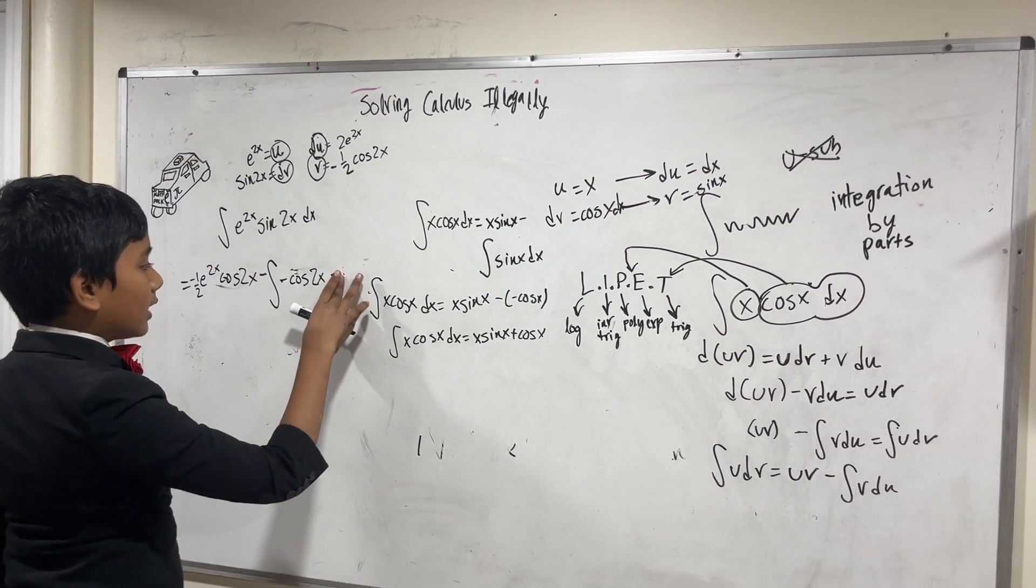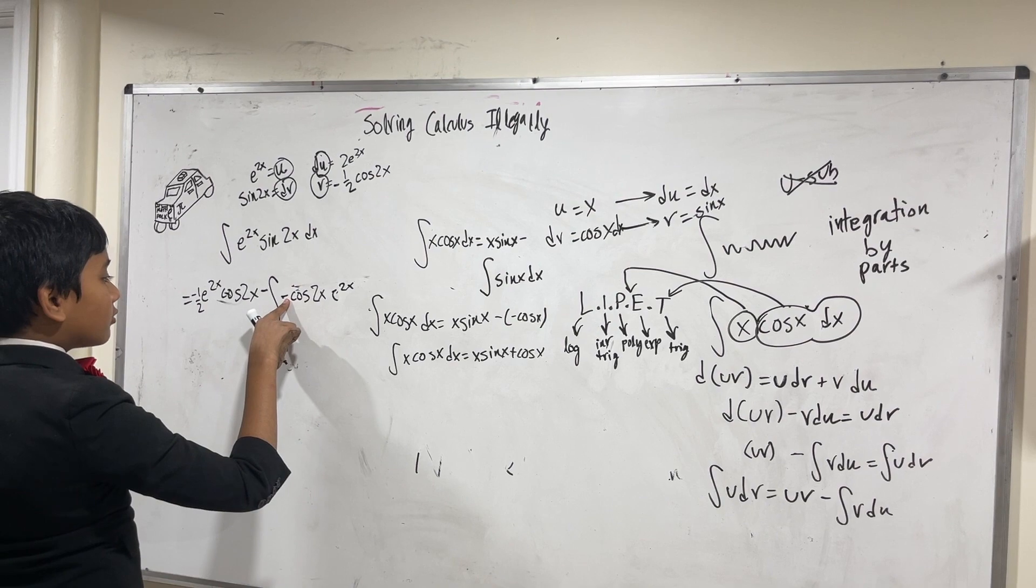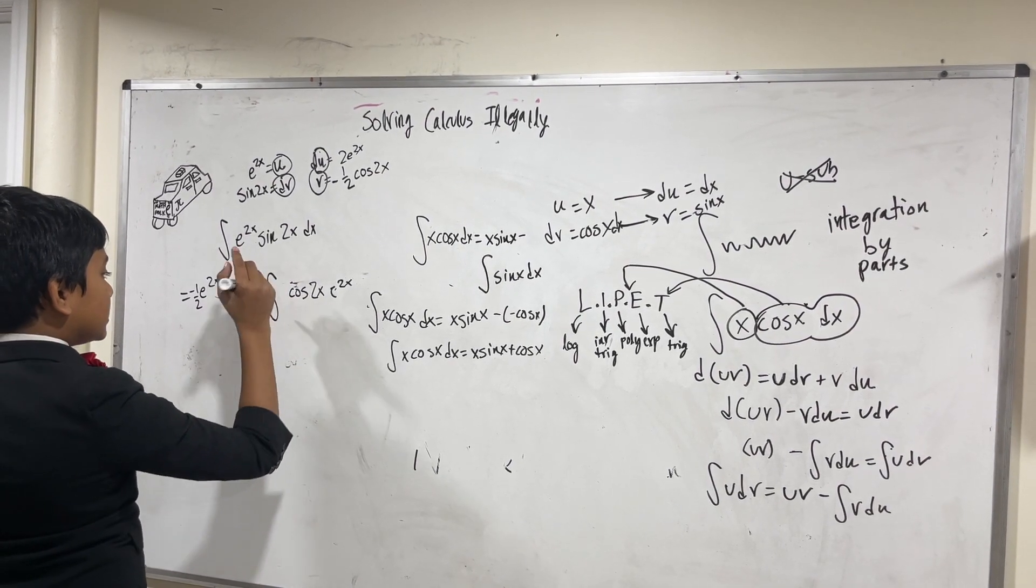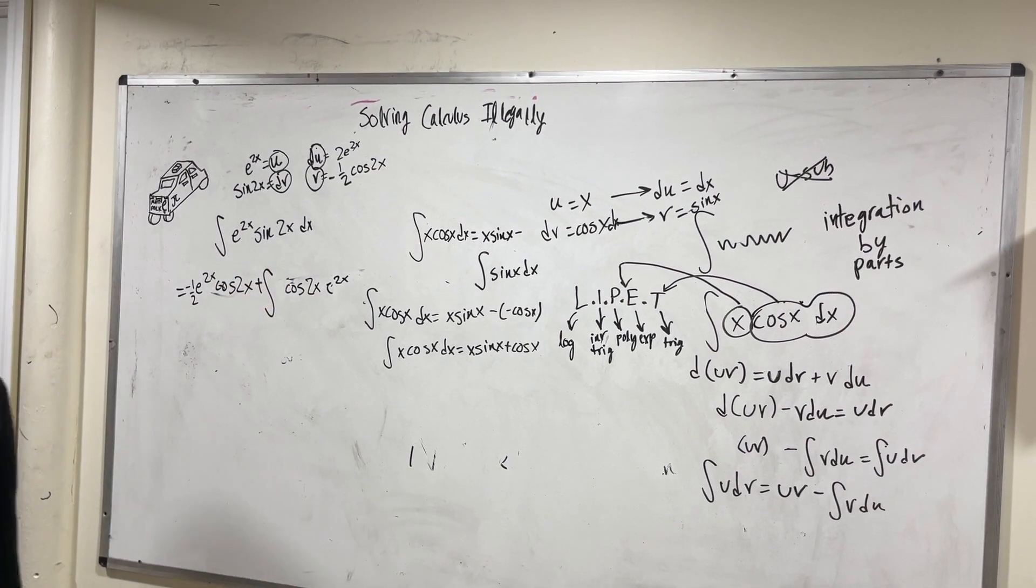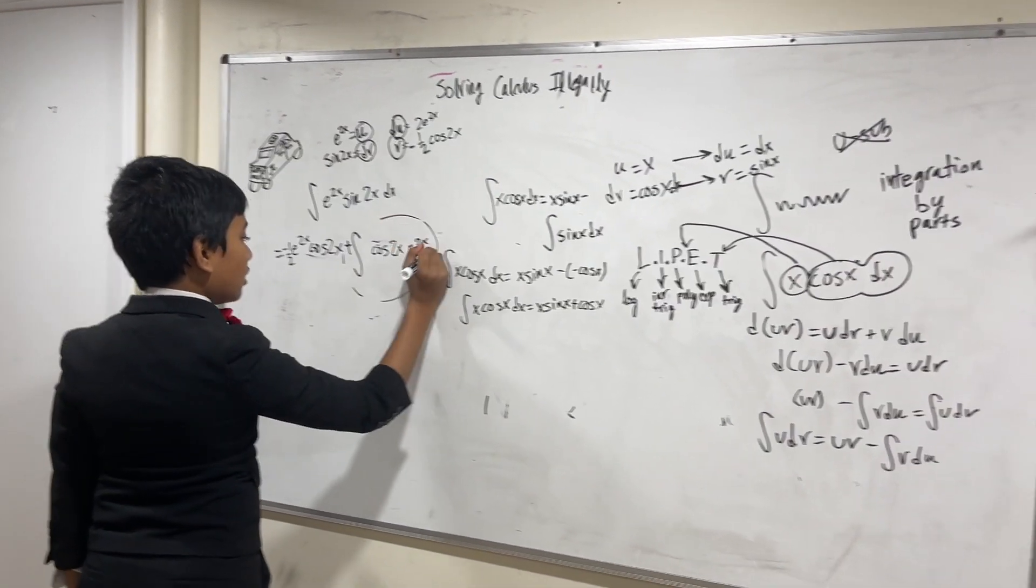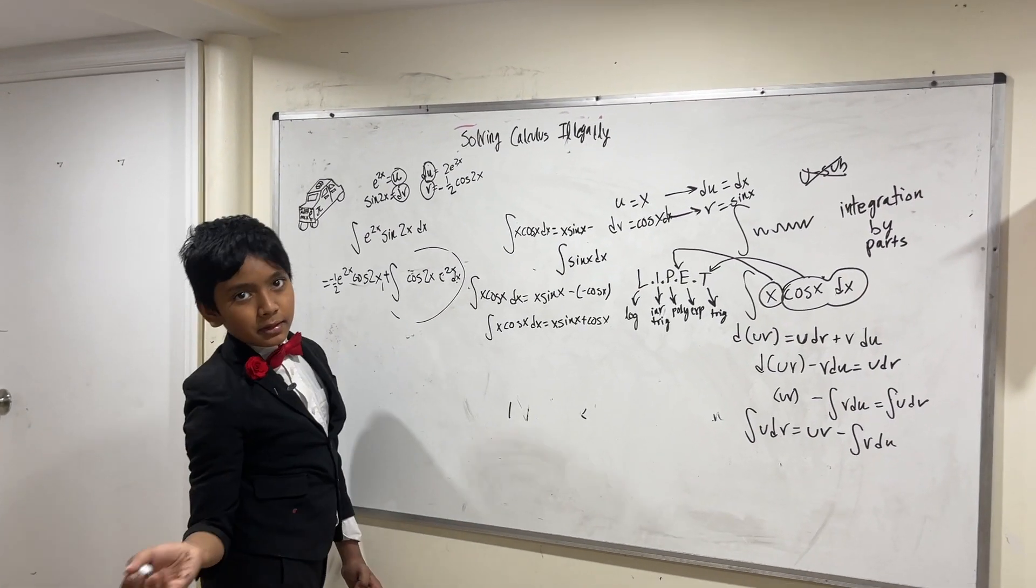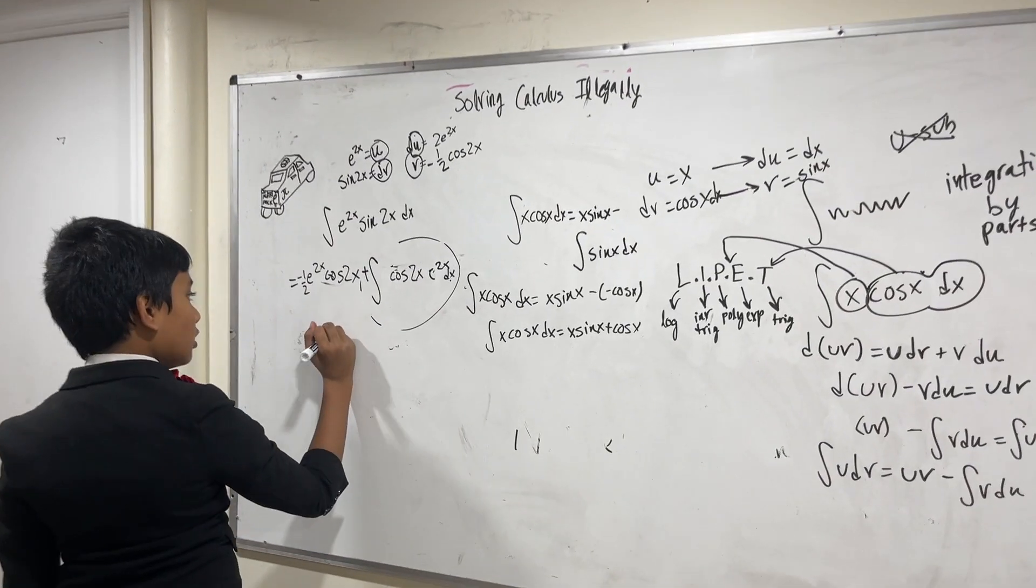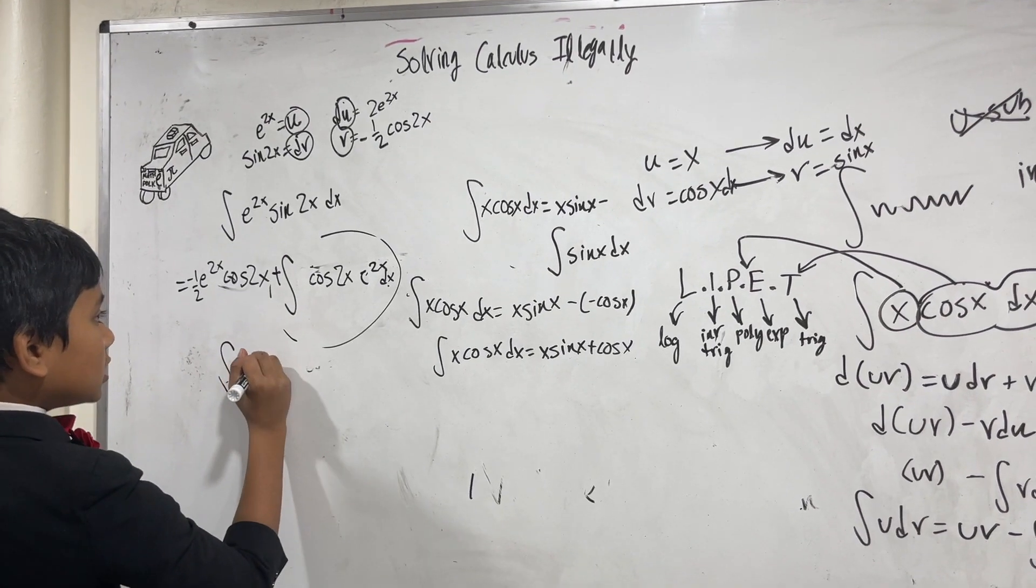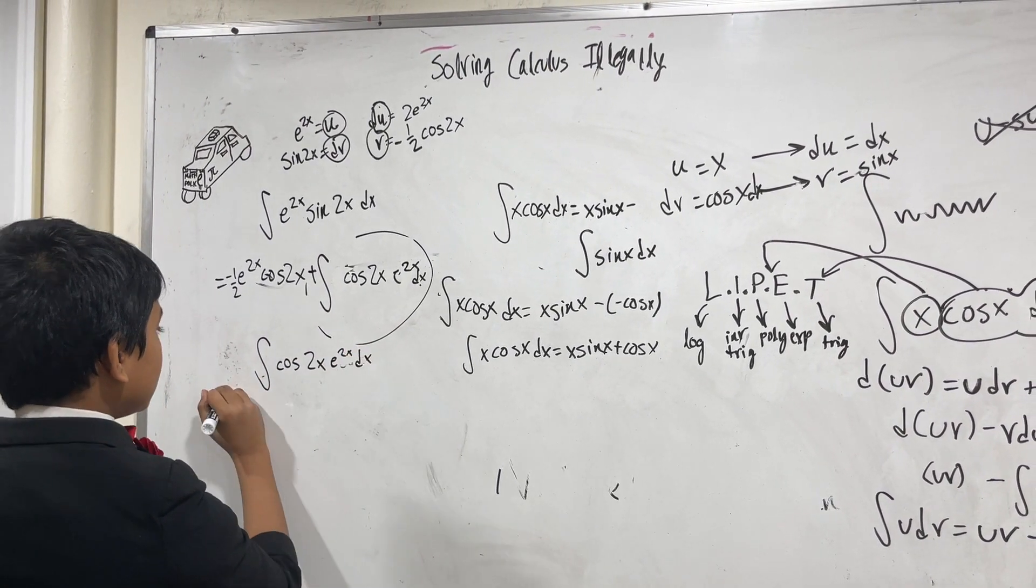And if you really wanted to, you could take the minus 1 out of there because it's a constant and make this a positive. So now we've got to find what this is using integration by parts as well.